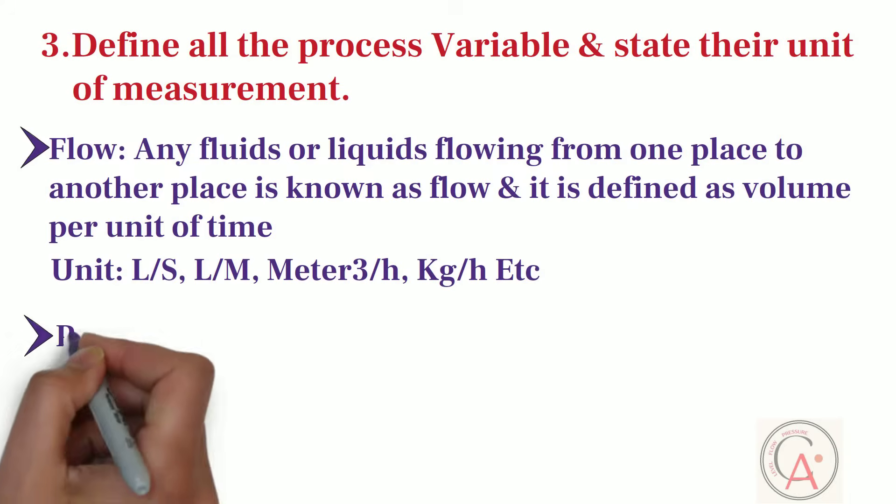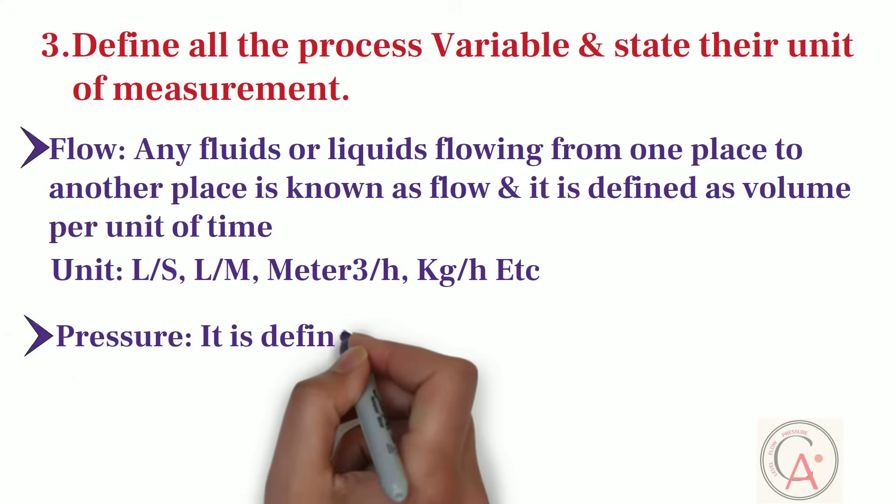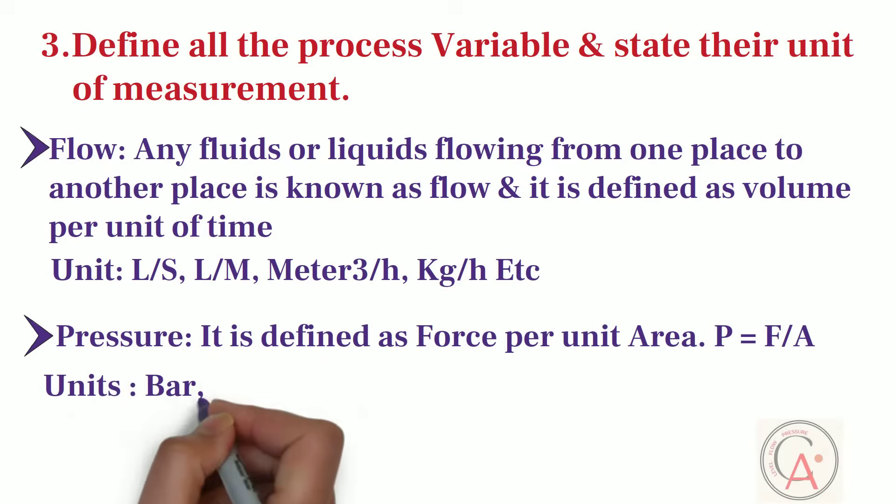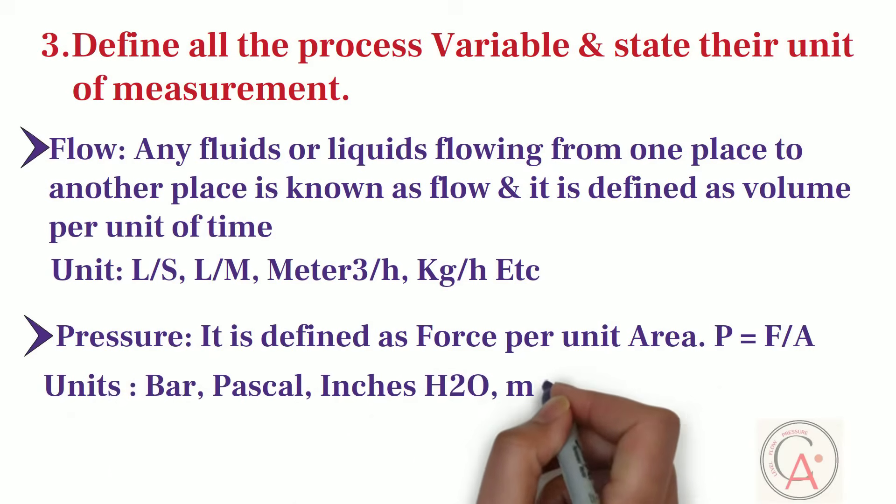Second type of process variable is the pressure. It is defined as force per unit area. And it is usually measured in bar, pascal, inches H2O, mH2O, etc.